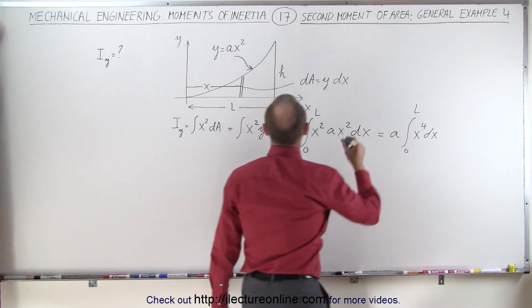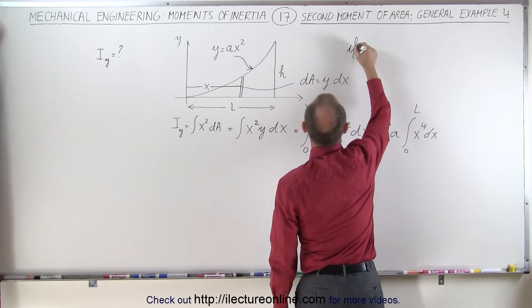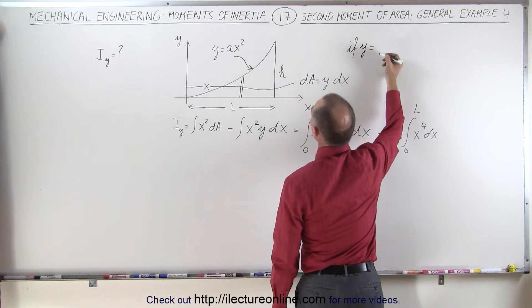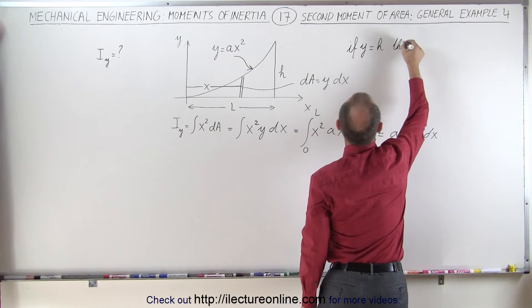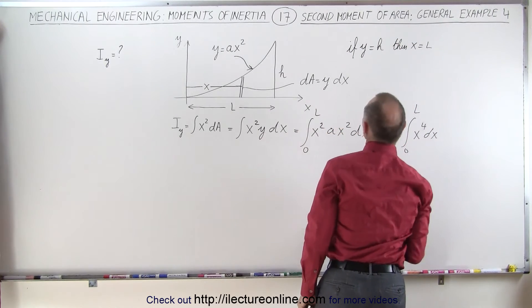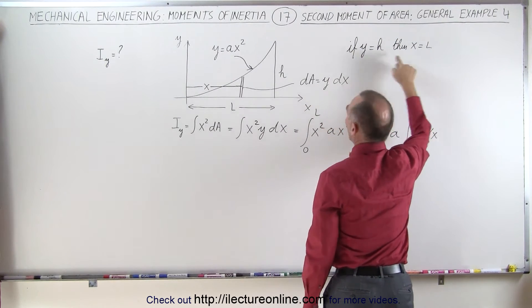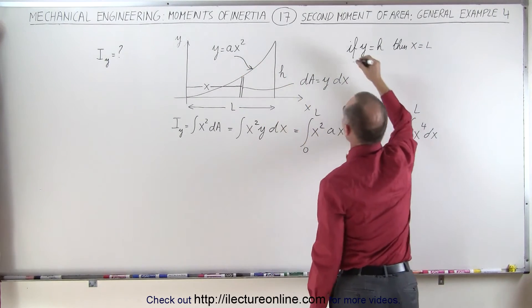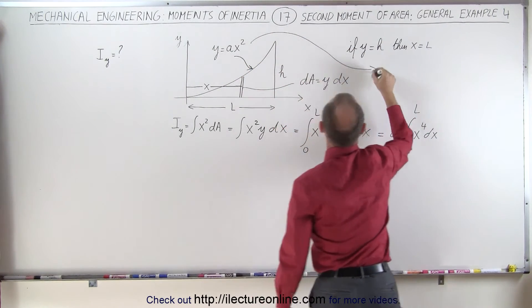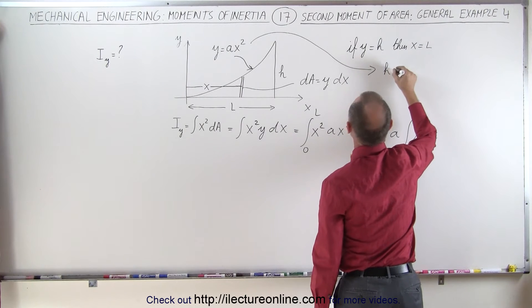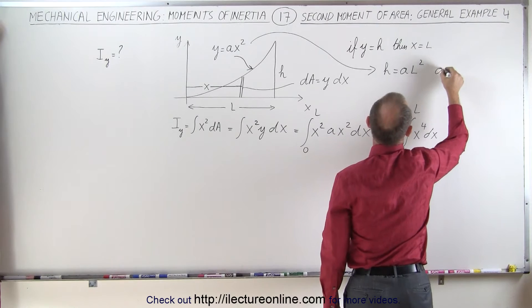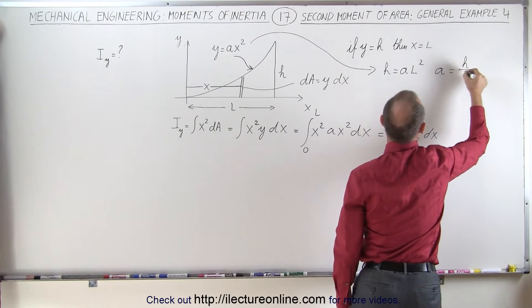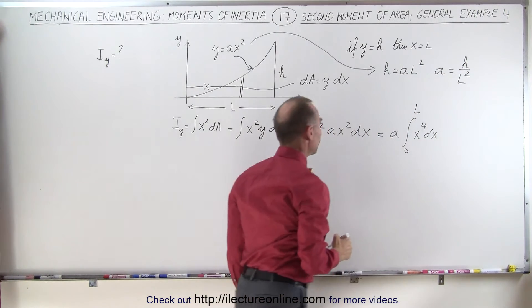We can say that if y is equal to H then x will be equal to L. Now if we plug those two values in for y and x here, we get the following. So here we get Y which is H is equal to A times x which is L, and of course x is squared, which means that A can be written as H divided by L squared. And let's do that.